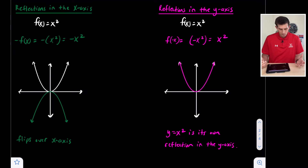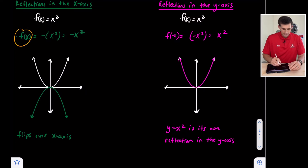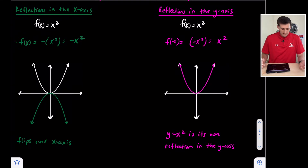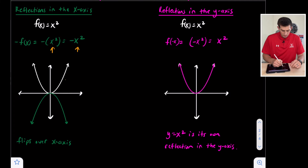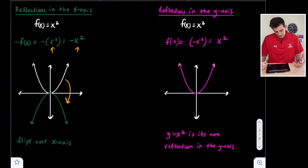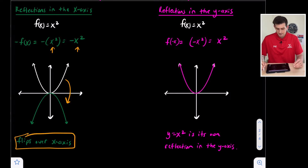For the x-axis reflection, we start with our parent function f of x equals x squared — the white parabola. For an x-axis reflection, we make the outputs opposite, so we write negative f of x. Since f of x equals x squared, that gives us negative x squared, which takes our white parabola and reflects it over the x-axis, giving us a parabola that opens down.